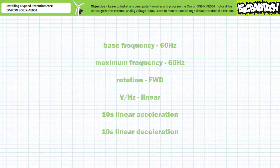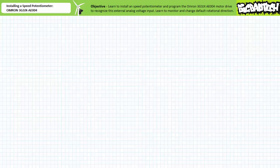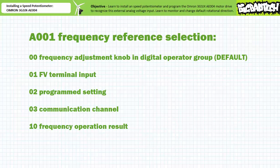Now we need to program the motor drive to recognize and respond to the external speed potentiometer analog voltage input. Extended function parameter A001, frequency reference selection, has several available options: 00, the default setting, is the frequency adjustment knob in the digital operator group; 01 is the FV terminal input — this is the one we want to select today; 02 is a pre-programmed starting frequency saved in the F001 output frequency setting entry; 03 is over a Modbus communication channel; and finally 10 is a more complicated frequency operation result.